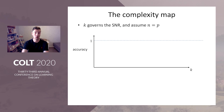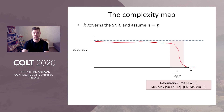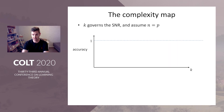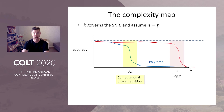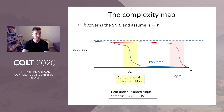Let's review what's known and what's new. Ignoring constants, K controls the SNR on the x-axis and accuracy is on the y-axis. The first result is an information limit result: exhaustive search succeeds in recovering the spike all the way up to the information limit, which occurs at n over log p, beyond which no algorithm is able to recover the spike regardless of computational effort. If we restrict ourselves to polynomial time algorithms, a computational phase transition occurs at square root n, and there is evidence that this is tight.